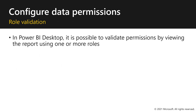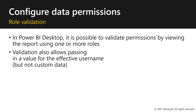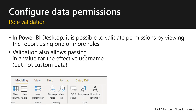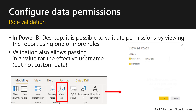In Power BI Desktop, it is possible to validate permissions by viewing the report using one or more roles. Validation also allows passing in the value for the effective username, but this does not apply to custom data. To do that, click the View As button in the top ribbon of Power BI Desktop, make sure 'Other user' is checked, and select the roles you want to enforce. In this example, the manager role is selected.